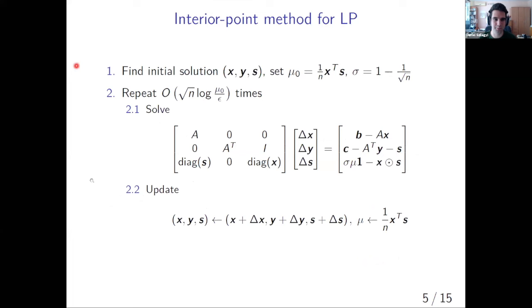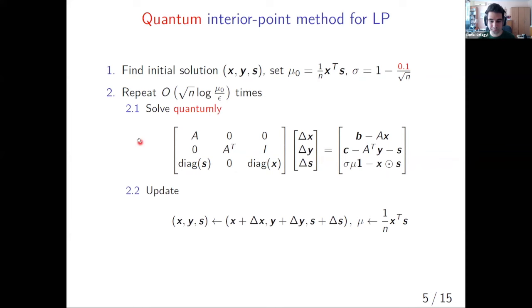Here you can see this whole algorithm in an algorithmic form. You see that the bulk of it is actually spent on solving this linear system here. The specifics of this linear system are not important. But the takeaway is that the matrix here changes a bit in all of its entries, this diagonal matrix of x and s, and the right hand side changes a bit. But obviously, because we are at a quantum conference, we want a quantum algorithm. So what was the easiest thing to do? We just solve this linear system quantumly.